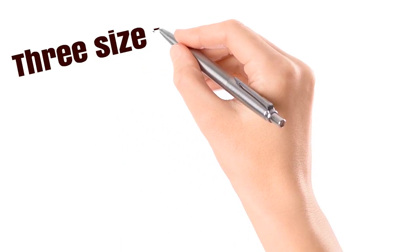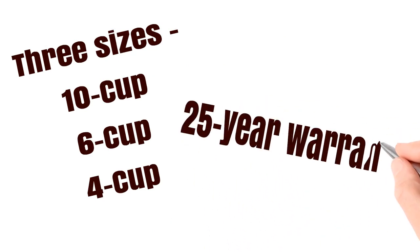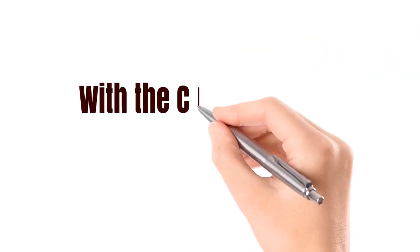It comes in three sizes: 10, 6 and 4 cup. But one of the most noticeable features about it is that Cuisinart give it a full 25 year warranty. They obviously have full confidence in their product, so let's see if that confidence is justified.